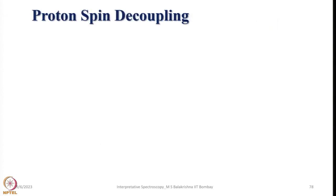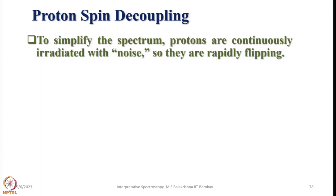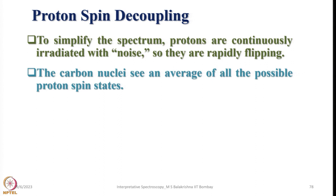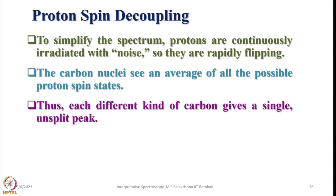As a result, we perform proton spin decoupling. To simplify the spectrum, protons are continuously irradiated with noise so they are rapidly flipping — we are not giving them enough time to interact with carbon in the way they would normally. The carbon nuclei see an average of all possible proton spin states and as a result do not couple with any of them. Thus, each different kind of carbon gives a single unsplit peak. When 1H is written in curly brackets next to 13C, it means it is a 1H-decoupled 13C NMR spectrum.